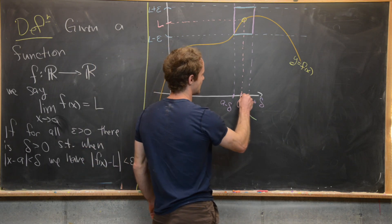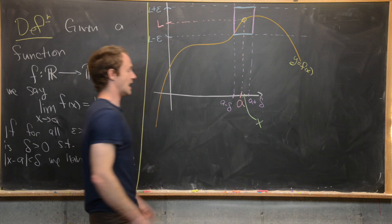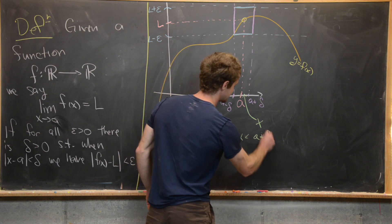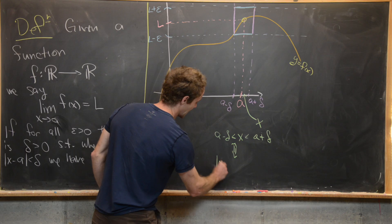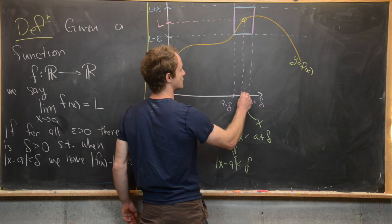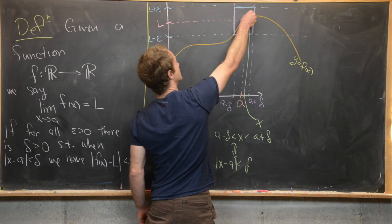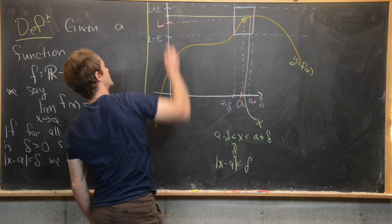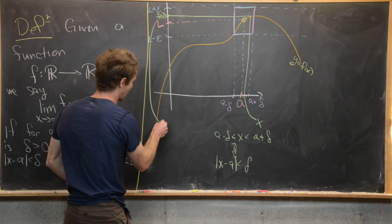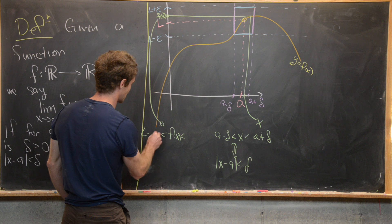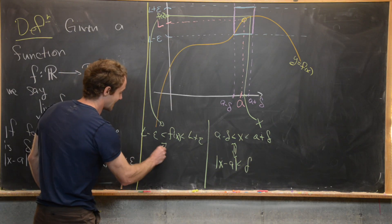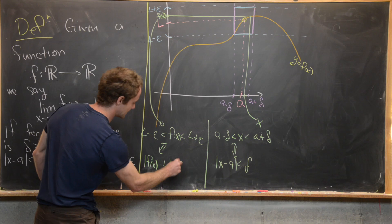If x is in the interval (a − delta, a + delta), that's equivalent to saying |x − a| < delta. Bringing that x value up to the graph, we can see that f(x) will land between L − epsilon and L + epsilon, which is equivalent to the absolute value inequality |f(x) − L| < epsilon.